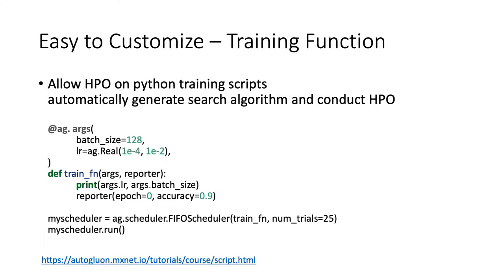Now let's define a searchable training function. AutoGluon allows HPO on any Python training function, which only requires adding a simple decorator with corresponding search spaces. Python users often use argparse to change the default values of hyperparameters, so the training function often takes arguments from the parser. Following a similar convention, we use a decorator ag.args to construct arguments, where variables can be constant — such as batch size set to 128 — or we can inject the learning rate as a searchable hyperparameter between 1e-4 and 1e-2. By adding this decorator, we have already converted this training function to be AutoGluon searchable. We can then create a scheduler and launch the experiments.